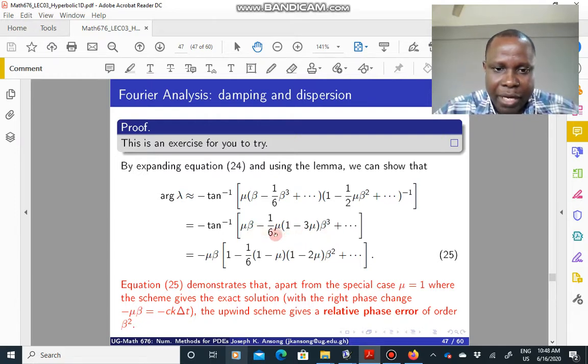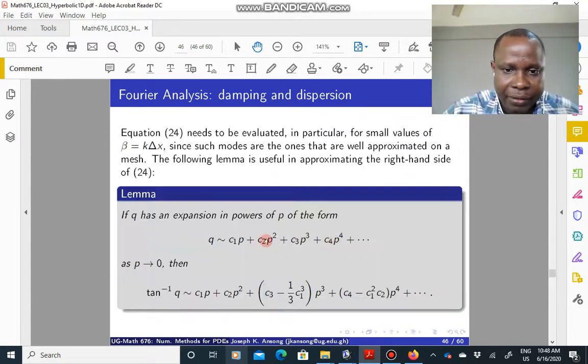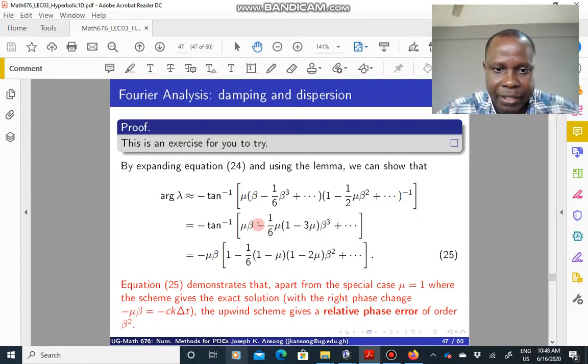And now if you compare what is in here to the lemma, to the q which is this, then you can make some deductions. You can compare the two and you can see that the tan inverse of this expanded thing is equal to equation 25. So which means that the argument of the complex amplification factor of the upwind scheme is basically given by this expression here on the right hand side.